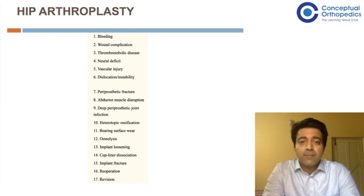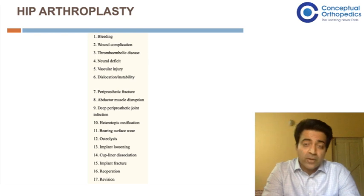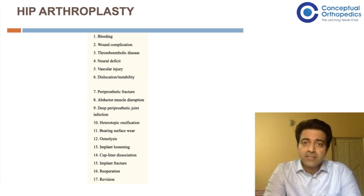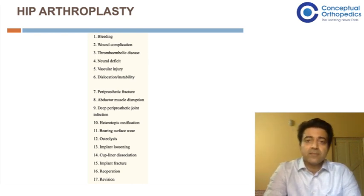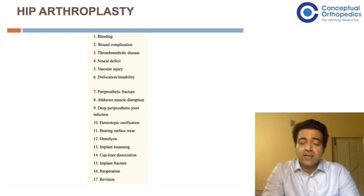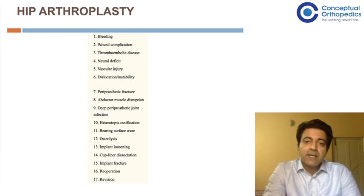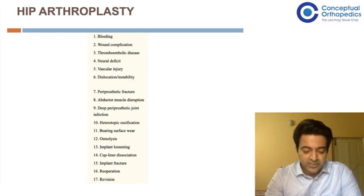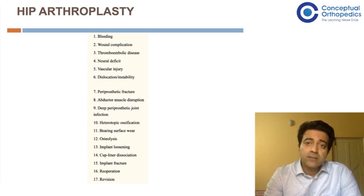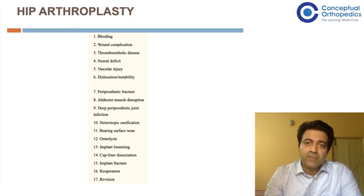We will start with hip arthroplasty complications first. They can be classified as either duration-based or etiology-based. Duration-based can be either early, defined as occurring within 6 weeks or 3 months after surgery, or late if occurring thereafter. Etiology-based classification can be patient-based, surgeon-based, or implant-based. The first few complications — bleeding, wound complications, deep vein thrombosis, pulmonary embolism, neurovascular injury, and dislocations — are usually recognized as early causes.